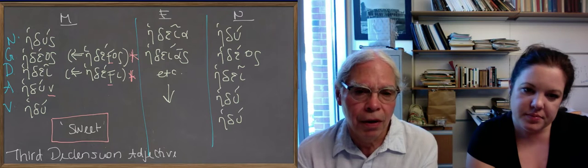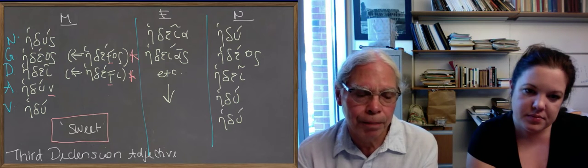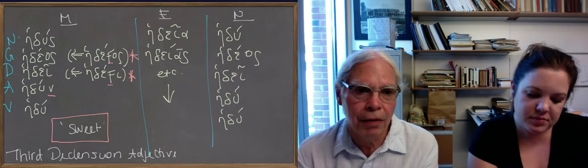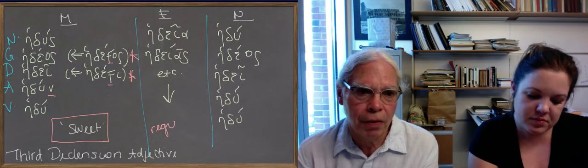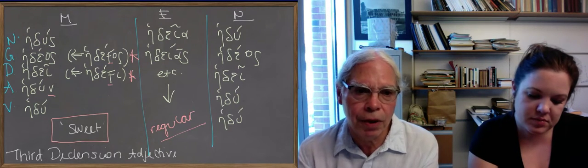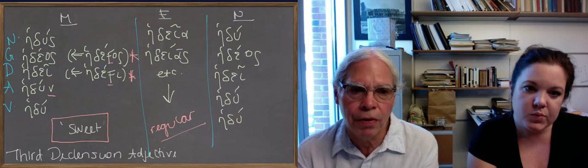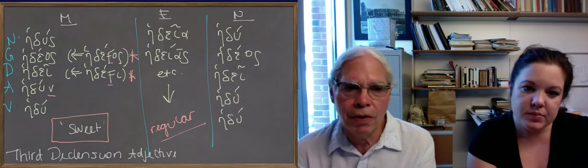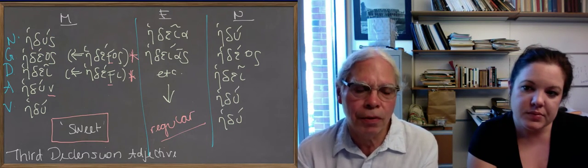Feminine endings of the type thalatta, except you've got an iota, so you've got alphas, long alphas throughout the singular and then the plural is the same. So there are no surprises in hedaya, hedayas and so forth.